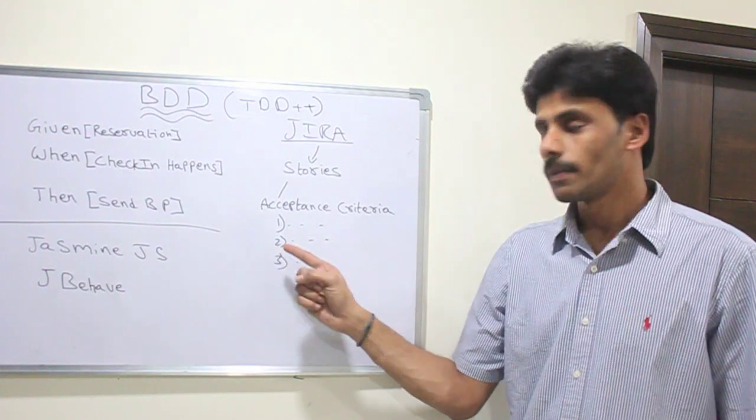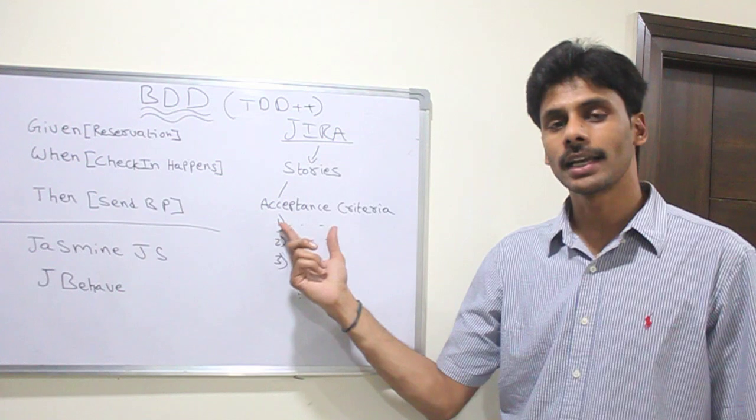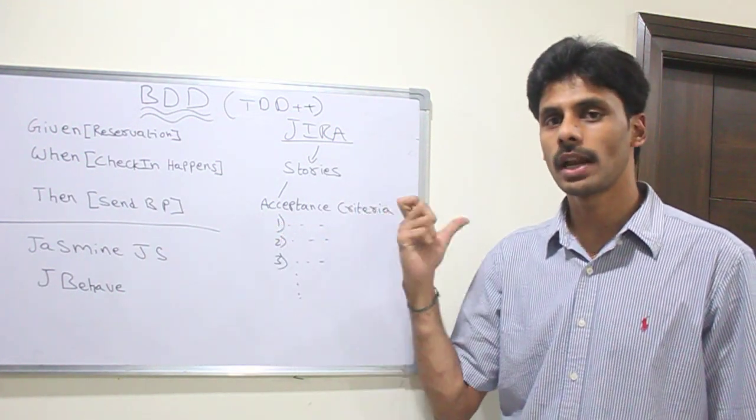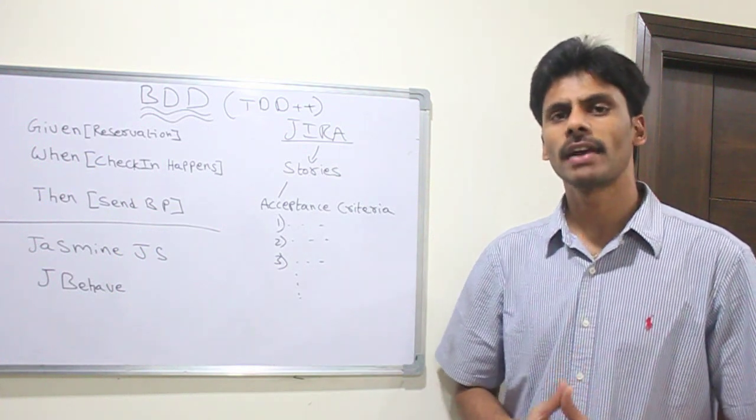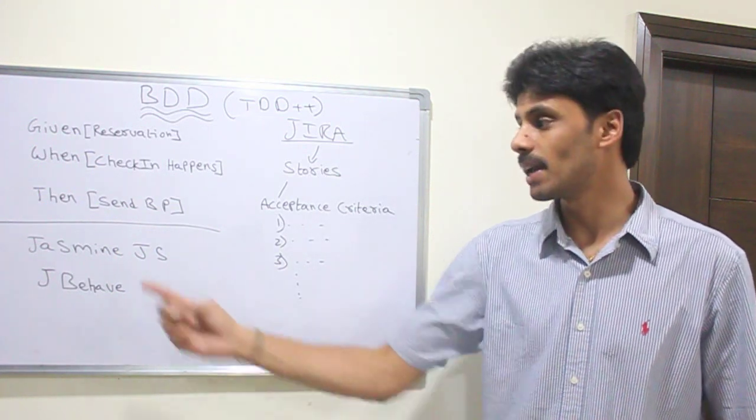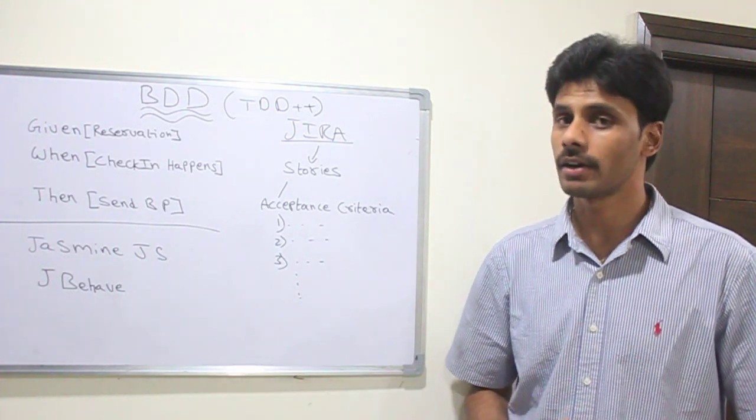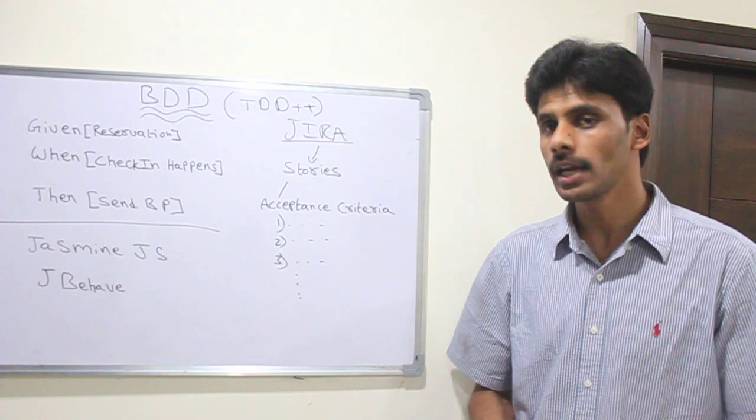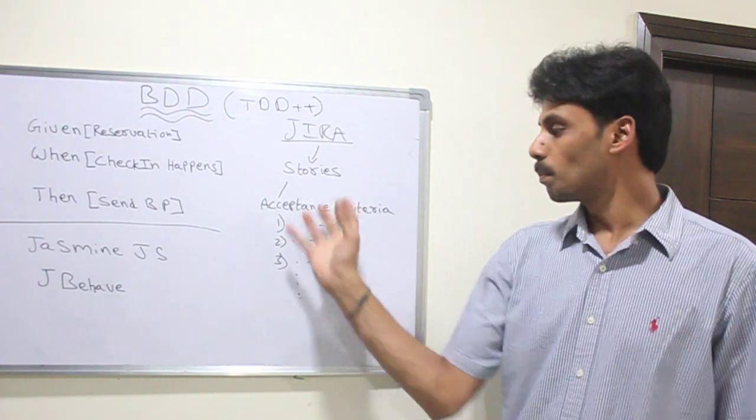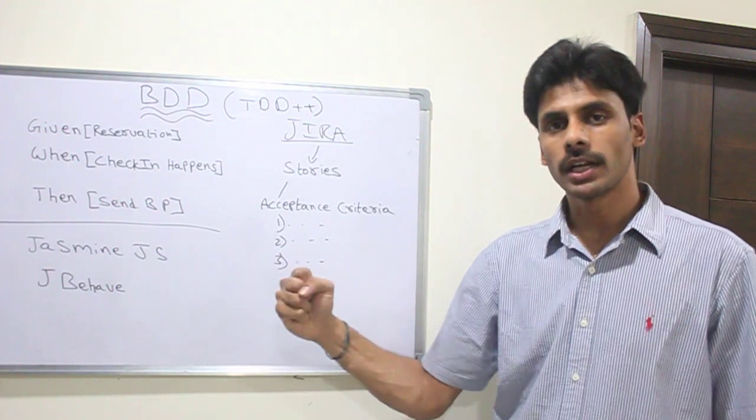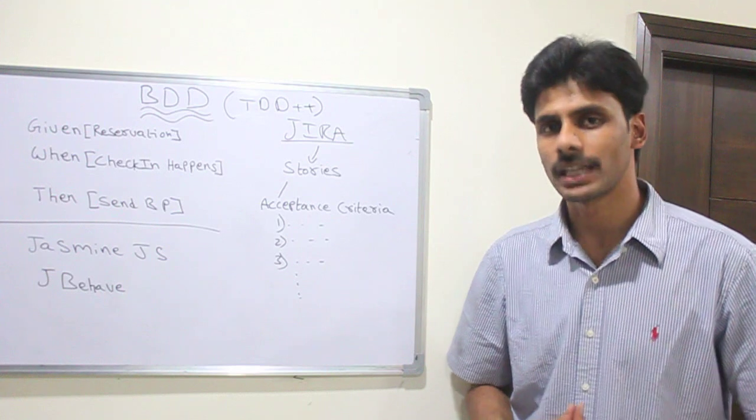So when we write our tests, we'll write those tests exactly against these acceptance criteria. We'll match this acceptance criteria to a particular test. Today we have a lot of BDD plugins like JBehave for Java, Jasmine JS for JavaScript behavioral driven development testing and coding. There are beautiful tools, very easy to use, and there are plugins which can pull this acceptance criteria from Jira and then run the corresponding test cases once we code them.